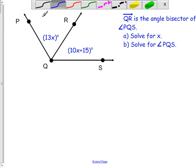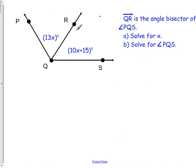I'm going to grab blue. So it says that QR, this ray right here, is the angle bisector of PQS, which is this whole big angle. So bisect, this word right here, the angle bisector, that means to cut in half.